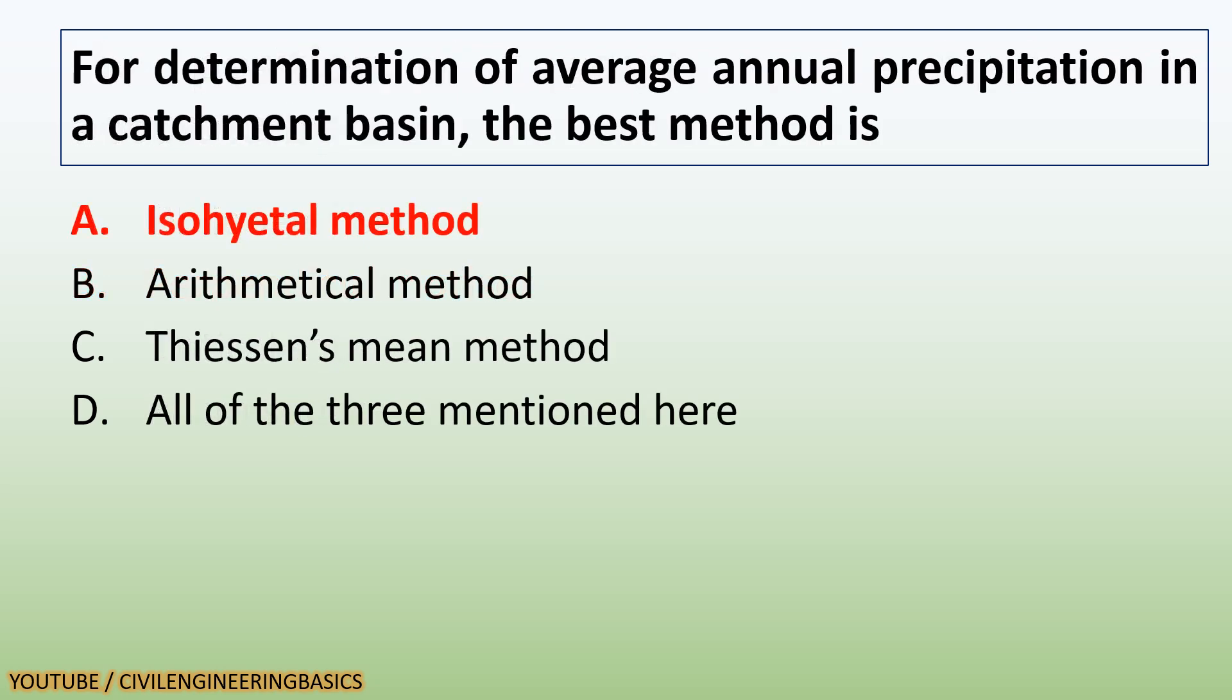For determination of average annual precipitation in a catchment basin, the best method is isohyetal method.